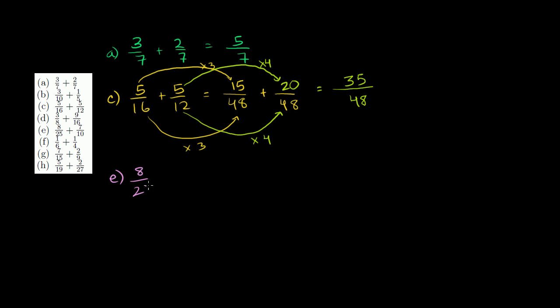8/25 plus 7/10. Once again, we don't have a common denominator, but we can solve that. Let's make, let's see, 50 is the smallest number that both of these go into. 25 times 2, so that's 50. 8 over 25, to go to 50, we multiply by 2. So the 8 we're going to have to multiply by 2. So it's going to be 16 over 50.